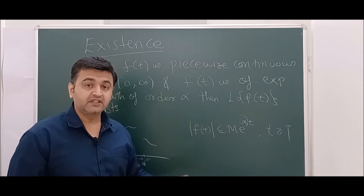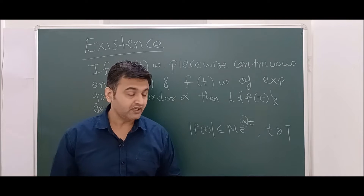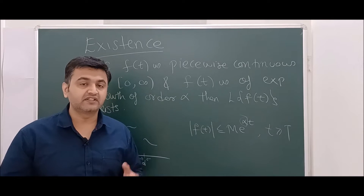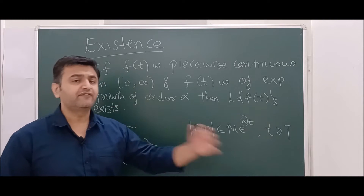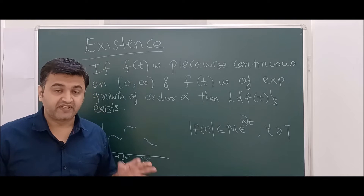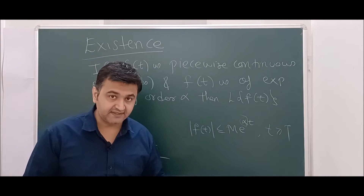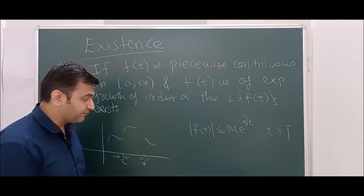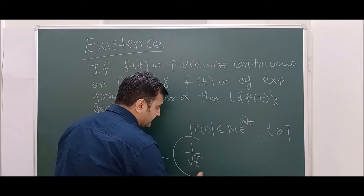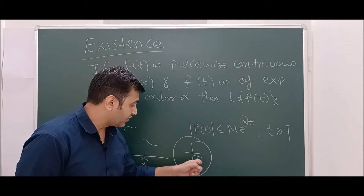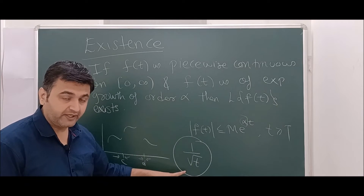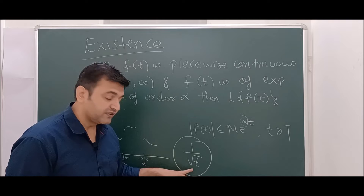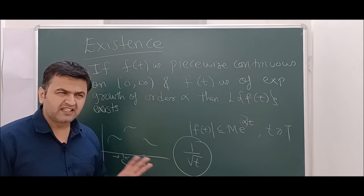If a function satisfies these two conditions then the Laplace definitely exists. This is a sufficient condition — not a necessary condition. If the Laplace exists, that does not guarantee the function satisfies both conditions. For example, f(t) = 1/√t is not piecewise continuous because as you approach zero, the limit does not exist. So this is not a piecewise continuous function.